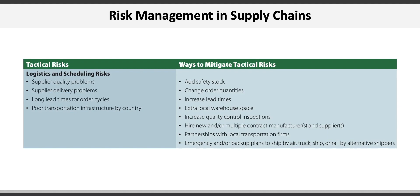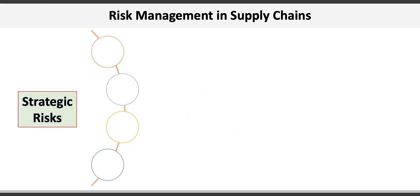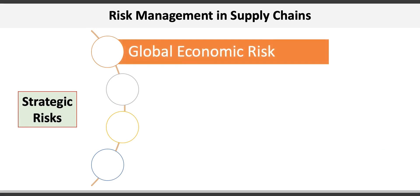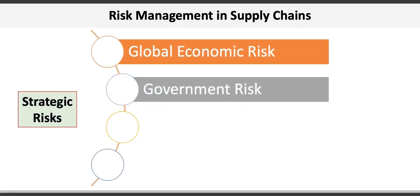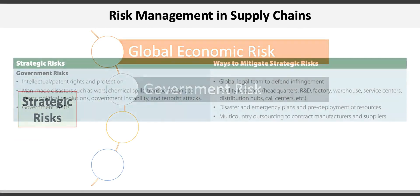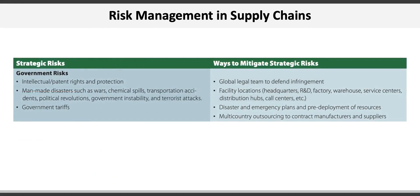The second category of supply chain risk is strategic risk. The first strategic risk is global economic risk, which might include exchange rate risk, regulations, or natural disasters. Mitigation strategies include managing locations, having disaster plans, and sourcing suppliers in multiple countries. The second strategic risk is government risk, which can include intellectual property rights and protection, and tariffs. Ways to mitigate government risks include global legal teams and multi-country outsourcing.